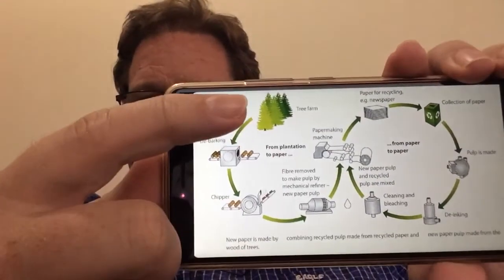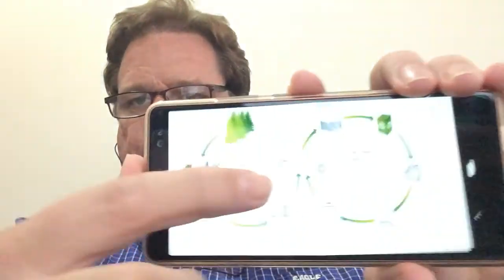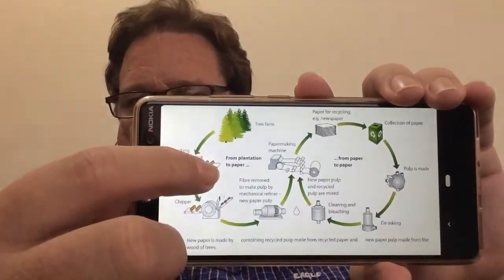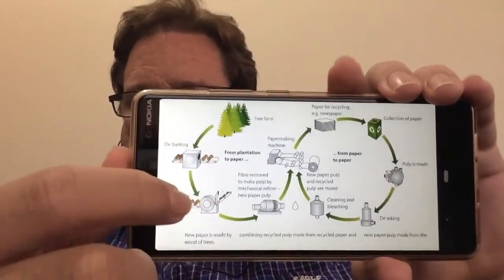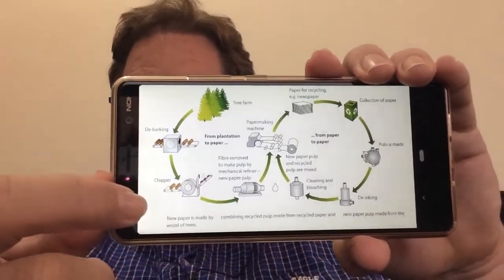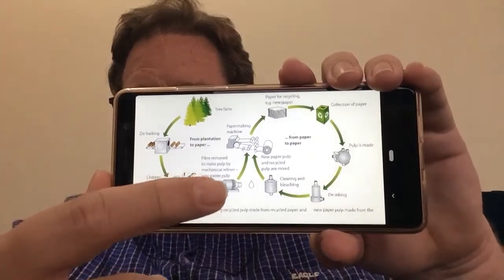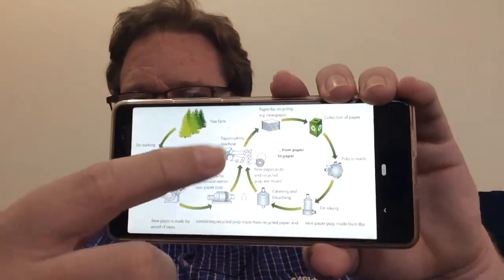They start on the tree farm where they take all the new trees that they've planted and they get rid of the bark on them. They chip them up into little pieces and then they crush them into fibers. So we get new paper going into the paper making machine.